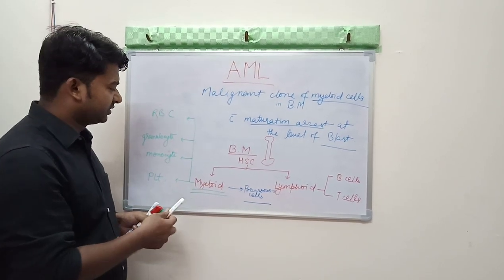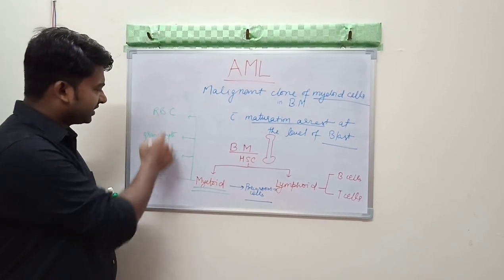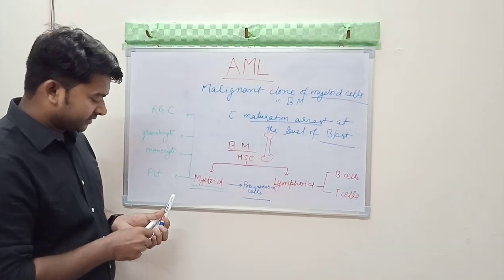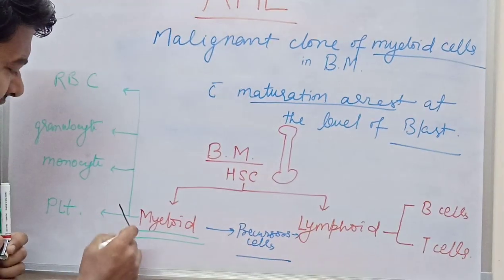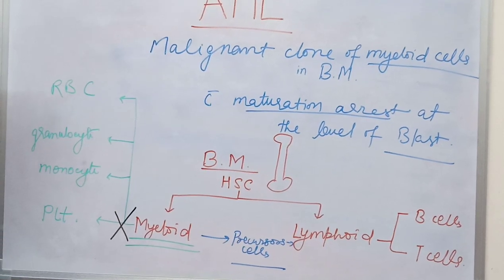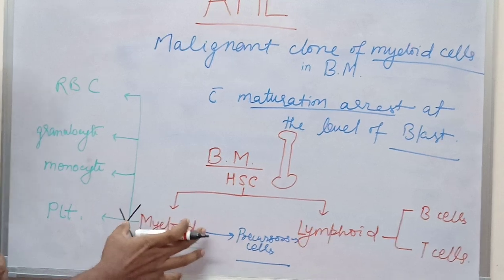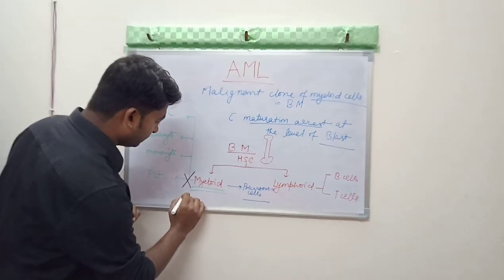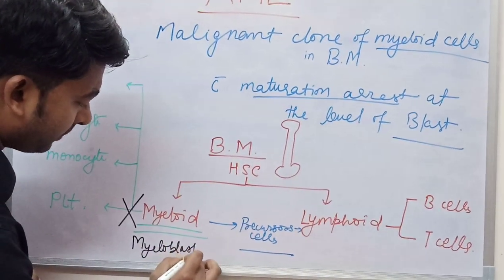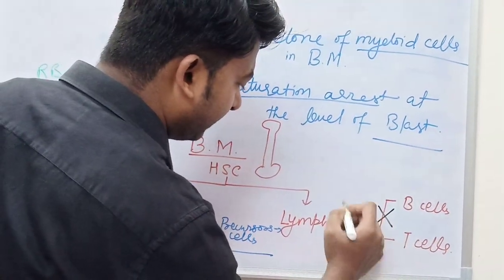But in AML, there is maturation arrest. So all these mature cells are not going to be formed. Cell division stops at a certain point — the cells are not going to mature. There will be a build-up of blast cells: myeloblasts in AML, and lymphoblasts in ALL.